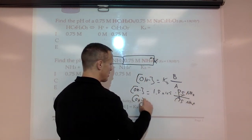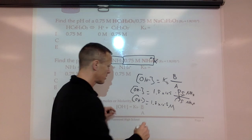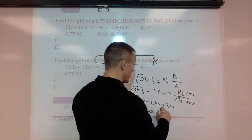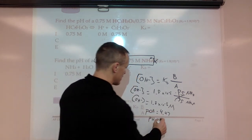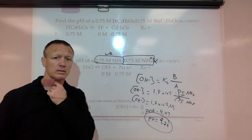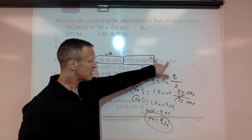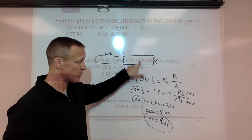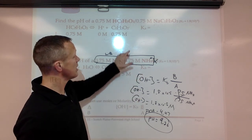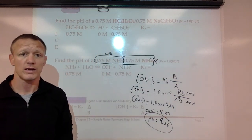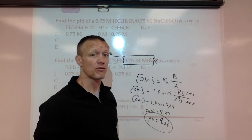The concentration of OH- equals 1.8×10⁻⁵. Taking the negative log gives a pOH of 4.74, so pH equals 14 minus 4.74, which is 9.26. The pH of this buffer is higher because the base has a stronger Kb relative to its conjugate acid's Ka. In the acetic acid case, Ka was bigger than Kb of its conjugate, so that buffer was slightly acidic. Next video, we'll show what happens when we add acid or base to these buffer systems.